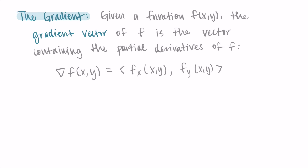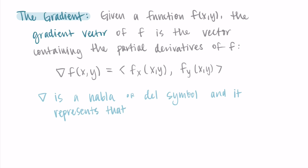The upside-down triangle is called a nabla or a del symbol — I've heard both used. In multivariable calculus we use this nabla symbol any time we are representing that partial derivatives are involved. Because the partial derivatives go in the x and y components respectively, we use this nabla symbol to represent that there are partial derivatives going on. You'll see this symbol again in other instances involving partial derivatives.